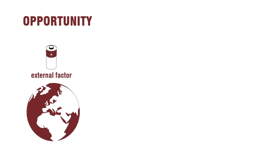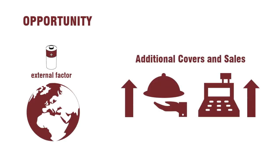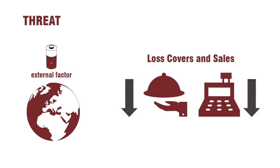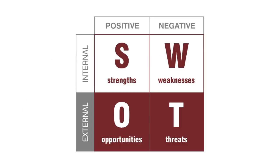An opportunity is a positive external factor that could be used to generate additional covers and sales. A threat, on the other side, is an external factor that can cause loss of covers and sales. These two squares in the bottom are related to positive and negative external factors. You should always be on top of your opportunities and threats so you can take the right decisions when you need it.